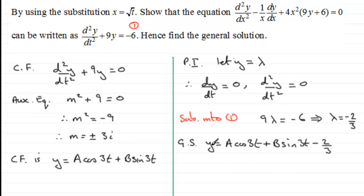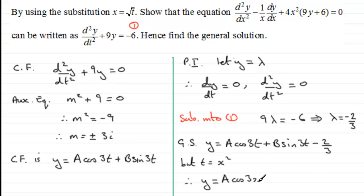We must remember that we introduced the substitution x equals root t, so we can't have any t's in our final answer. Since t equals x squared, the general solution becomes y equals A cos 3x² plus B sin 3x² minus two-thirds. That demonstrates how we can use a substitution to convert an unfamiliar equation into one we can solve in the usual way.